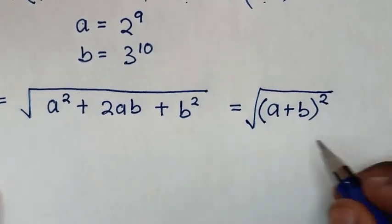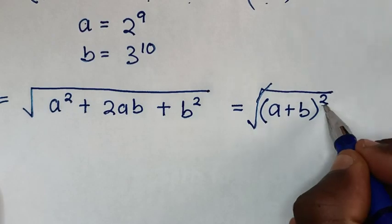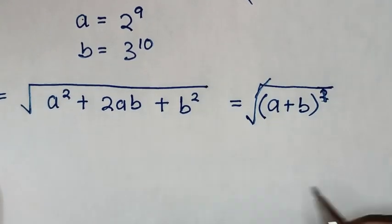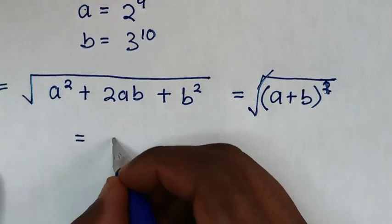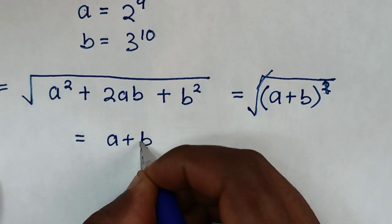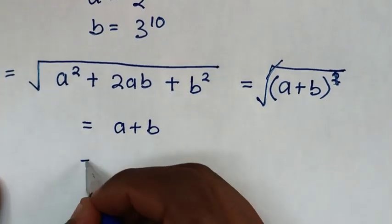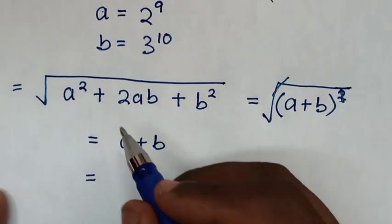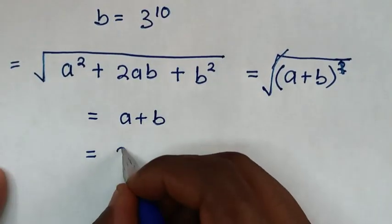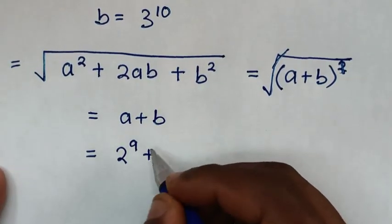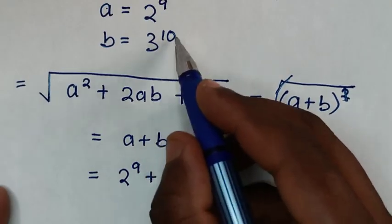This is equal to (a + b) squared. Then we have the square root, so the square root will cancel the square, giving us a plus b. Then substituting back: a is 2^9, so it will be 2^9 plus b, where b is 3^10.